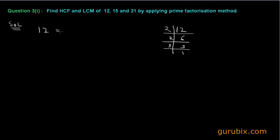So we can write 12 as 2 multiplied by 2 multiplied by 3, or we can write it as 2 to the power 2 multiplied by 3.